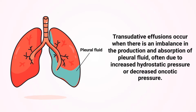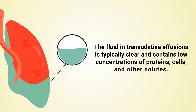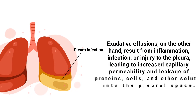Transidative effusions occur when there is an imbalance in the production and absorption of plural fluid, often due to increased hydrostatic pressure or decreased oncotic pressure. Common causes include CHF, liver cirrhosis, and nephrotic syndrome. The fluid in transidative effusions is typically clear and contains low concentrations of proteins, cells, and other solutes.